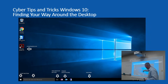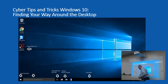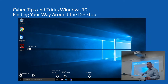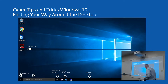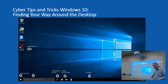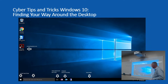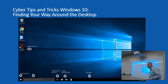Down here we have our taskbar. We can pin things to the taskbar — we'll talk about how to do that later. We can also move the taskbar around. We have a system tray over here, and our start menu and search menu down here as well.